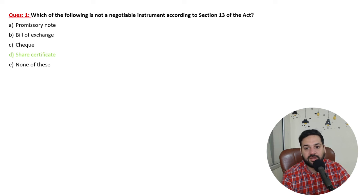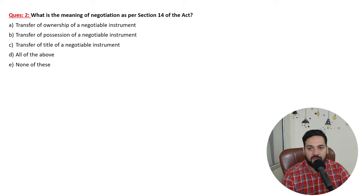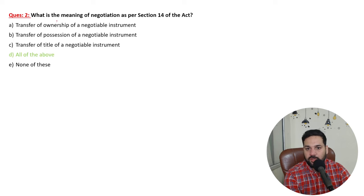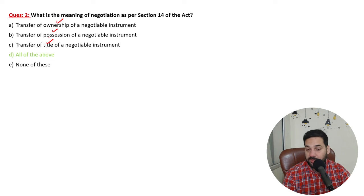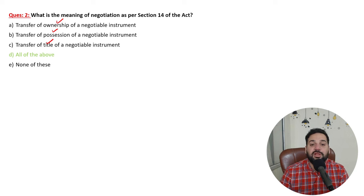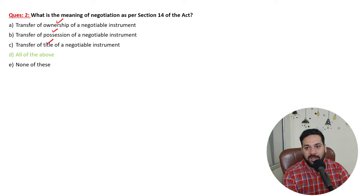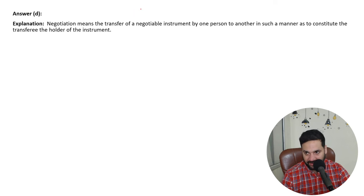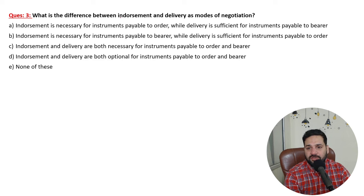What is the meaning of negotiation? When you transfer the ownership, possession, and the title of a negotiable instrument — whether it's a check, promissory note, or a bill of exchange — that is negotiation. That is negotiation as per Section 14 of the act. Now, the difference between endorsement and delivery.